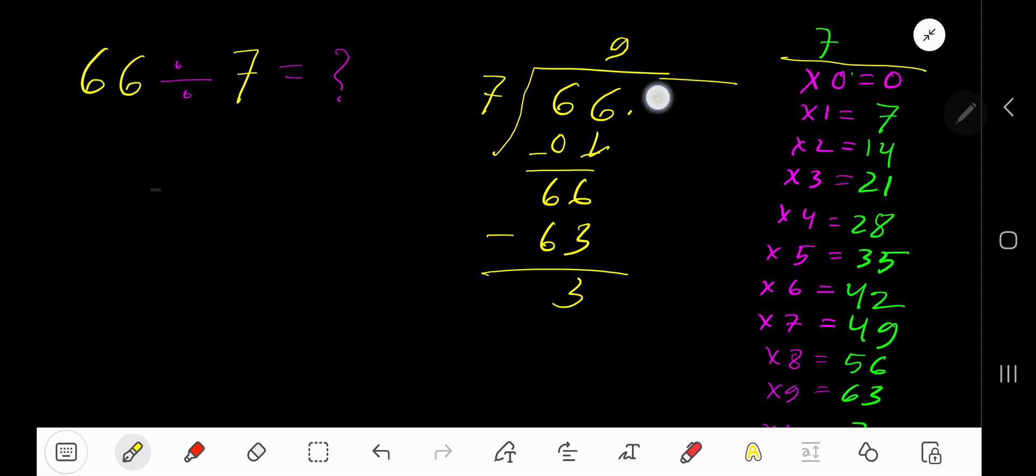Bring down the first zero. Before the digit there is a decimal, the decimal must come to the quotient directly. 7 goes into 30 how many times? 5 times would be 35, which is too big, so 4 times. 4 times 7 is 28.